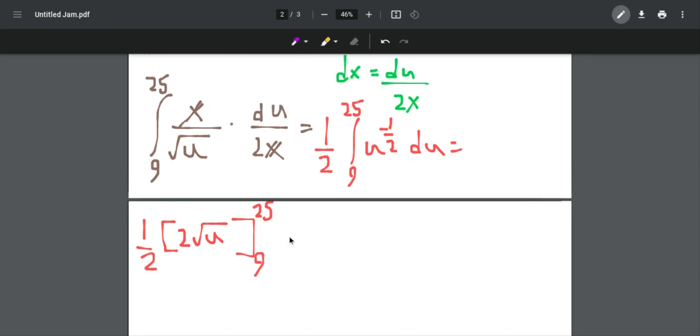Now it's just simplification and some algebra. When we plug in 25, square root of 25 is 5 times 2 is 10. And then when we plug in 9, square root of 9 is 3 times 2 is 6, so we should subtract 6.